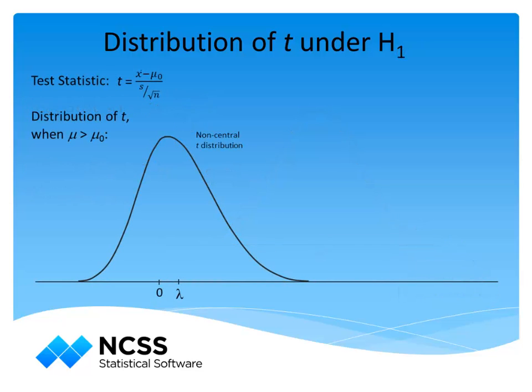Under the alternative hypothesis, the t-statistic follows a non-central t-distribution with the non-centrality parameter that is based on the difference of the true mean from the null mean, the standard deviation, and the sample size.